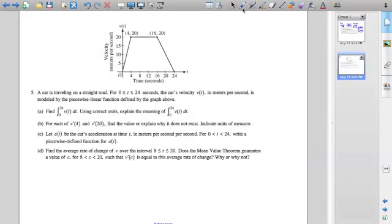Okay, for 5b, they want the value of v prime of 4 and v prime of 20. These are just the accelerations at 4 and 20.